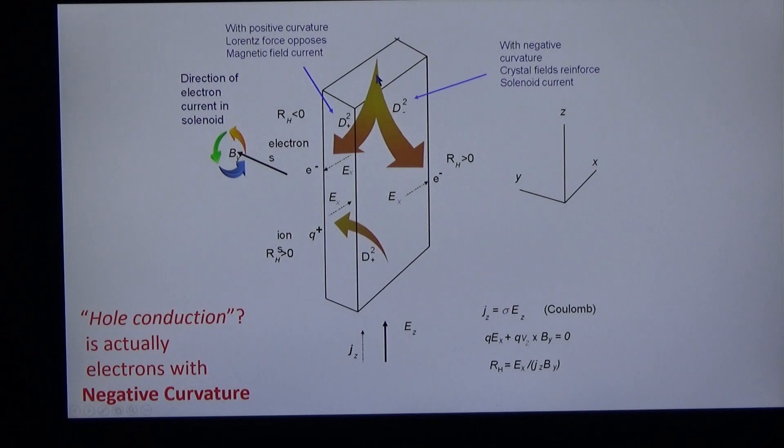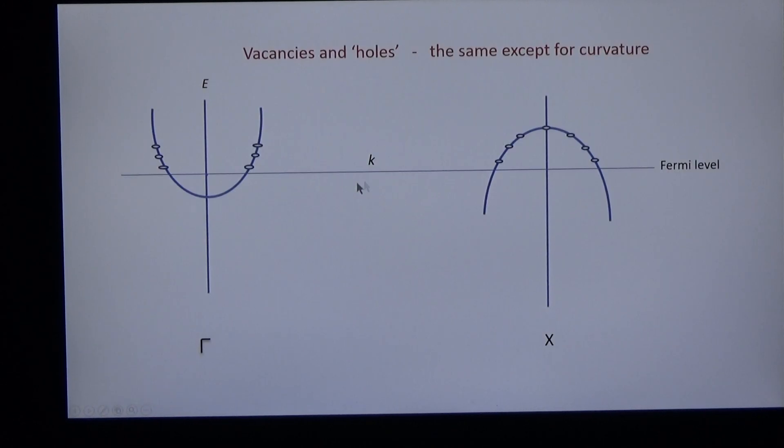The Hall coefficient in copper is negative and in aluminum positive. In the n-type semiconductor negative and in the p-type positive. In the low temperature superconductor negative and in the high temperature superconductor positive. In bismuth spectacularly negative and in arsenic spectacularly positive. It all depends on the dispersion.